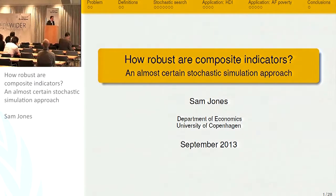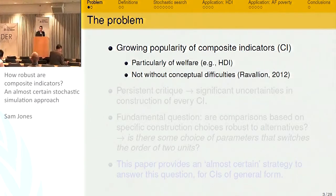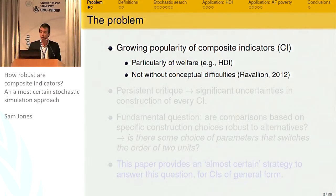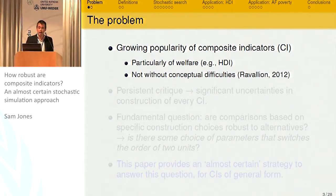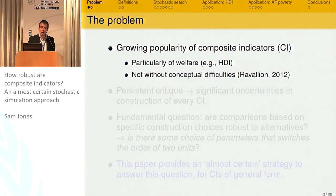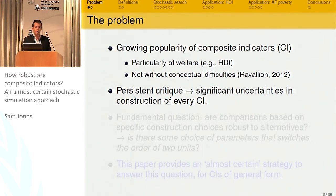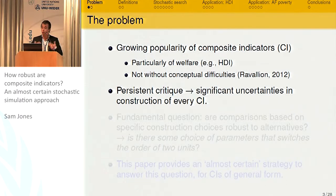The previous speaker kindly provided some of the motivation. He noted correctly that these indicators are becoming extremely popular — we all know the Human Development Index by the UNDP. Whilst there are some noted conceptual difficulties with these indicators, one of the main critiques that comes up time and time again is that there are significant uncertainties in how they're constructed, for example, arbitrary weights. So we use different weighting vectors to create these indices, but how robust are they? Do we get different results if we use a different set of weights?